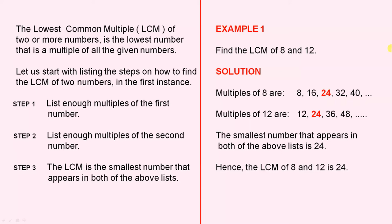Let us start with listing the steps on how to find the LCM of two numbers in the first instance. Step 1: list enough multiples of the first number. Step 2: list enough multiples of the second number. And Step 3: the LCM is the smallest number that appears in both of the above lists.